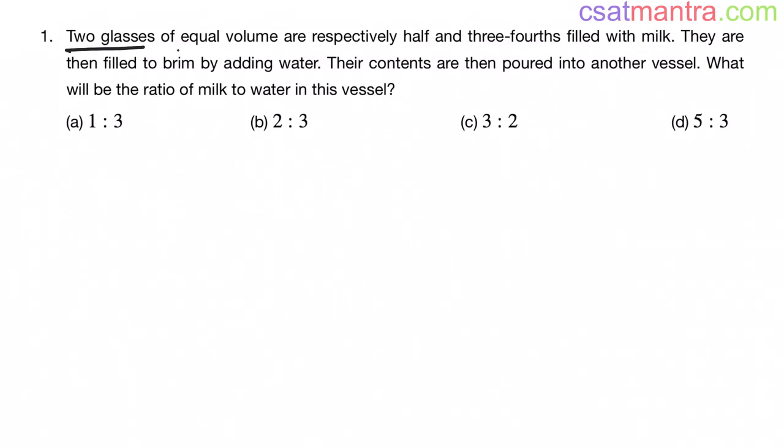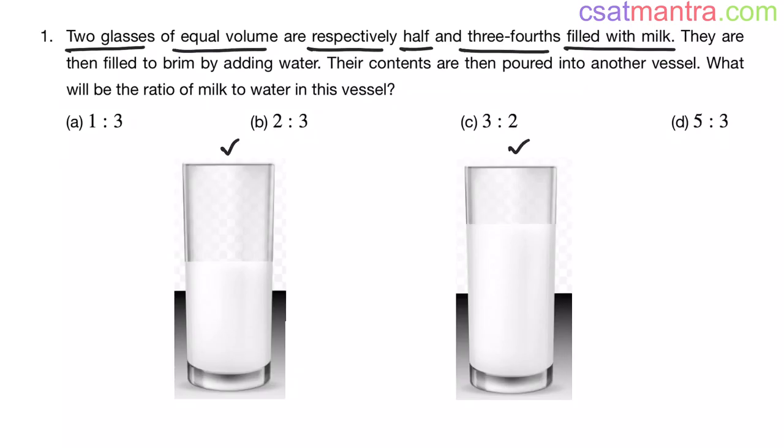Two glasses of equal volume are respectively half and three-fourths filled with milk. So we have two glasses of equal volume. Let's say the volume of these glasses is one liter. Glass one is half filled with milk, that means half liters. Glass two is three-fourths filled, so three by four liters.